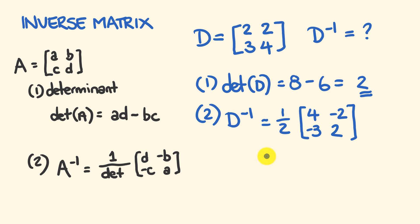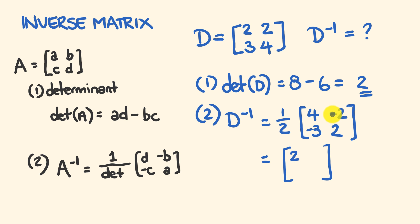Now we do the scalar multiplication. Half multiplied by 4 is equal to 2. Half multiplied by negative 2 is equal to negative 1. Half multiplied by negative 3 is negative 3 over 2. And half multiplied by 2 is equal to 1. There we have it — the inverse matrix of D.